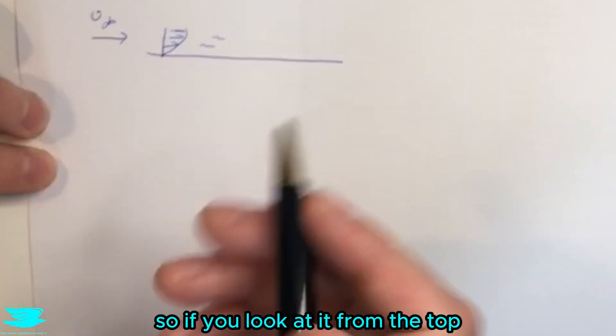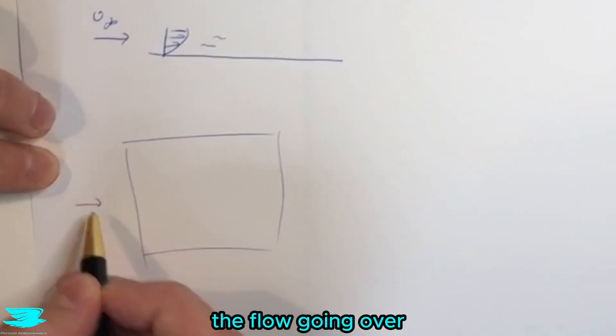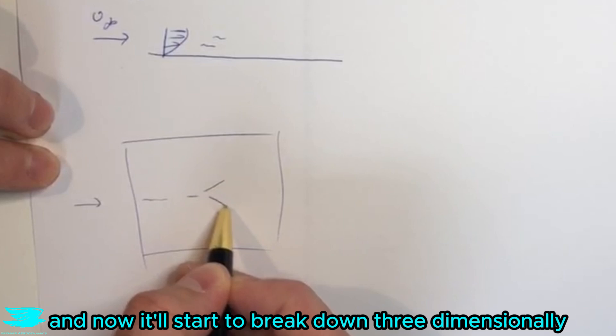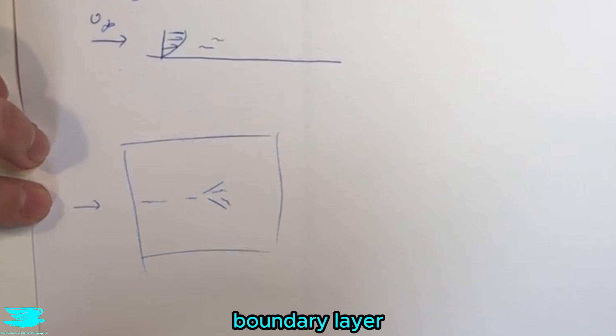So if we look at it from the top, let's say we have this exact same flat plate here, the flow going over. We had this two-dimensional turbulence and now it will start to break down three-dimensionally and that's when we start to get a full-blown turbulent boundary layer.